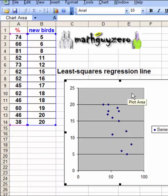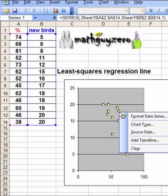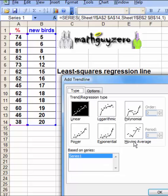What you have to do to get the regression line is to put your cursor over any point. Right click. Add trend line.